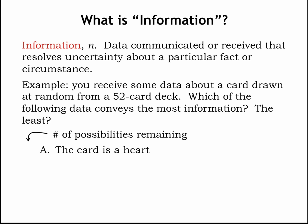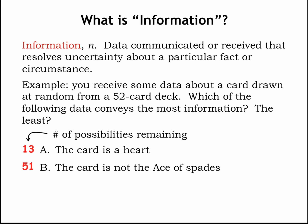a) You learn that the suit of the card is heart — this narrows the choice down to 1 of 13 cards. b) You learn instead that the card is not the ace of spades — this still leaves 51 cards that it might be. c) You learn instead that the card is a face card, that is a jack, queen, or king — so the choice is 1 of 12 cards.